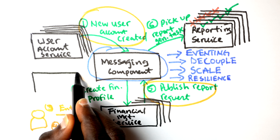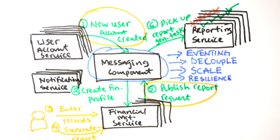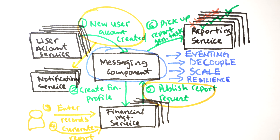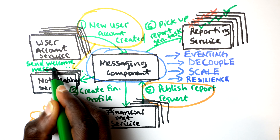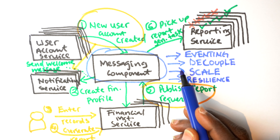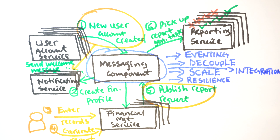Messaging also eases integration. When you have a messaging component, data, requirements, and tasks pass through it. When you build a new service, you don't need to adjust your existing services — as long as the events that the new service is interested in are published to the messaging component, the new service just subscribes and picks up those tasks. The new service doesn't need to know about existing services, and existing services don't need to know about the new service.